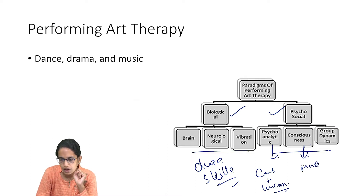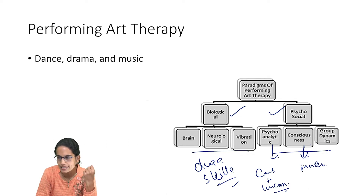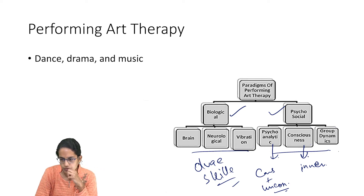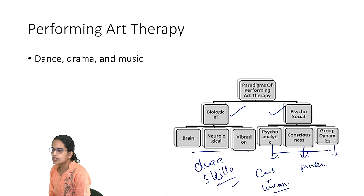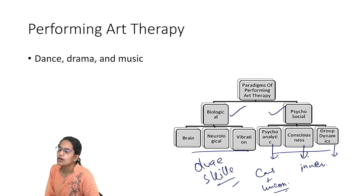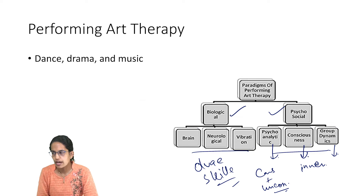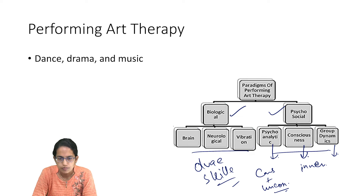Under the consciousness paradigm, the inner core and the outer core are related. The inner core represents harmony with the environment and cleanliness, while the outer core represents the anomalies which exist. The relationship of inner and outer is the basis for consciousness. Group dynamics helps in developing group morale and leadership abilities, and is used mainly for bringing in mental, emotional, and behavioral support for one another.